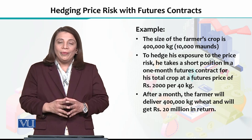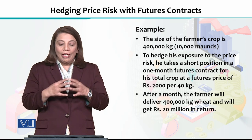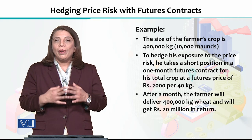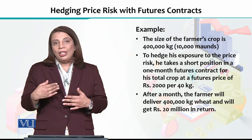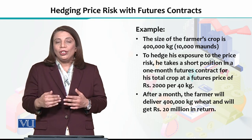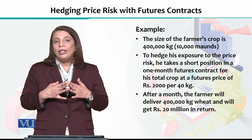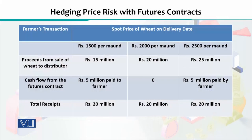Suppose we have a farmer who has grown a crop and is expecting a yield of around 10,000 maunds — that is 4,000,000 kg of total output. The prevailing market price is Rs. 2,000 per maund. The farmer wants to hedge and protect himself against any price fluctuations that might happen in the future, so he decides to go for a futures contract at the rate of Rs. 2,000 per maund.